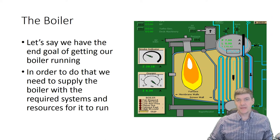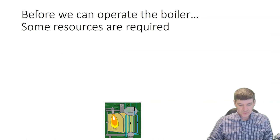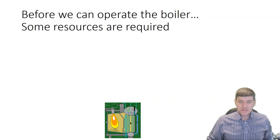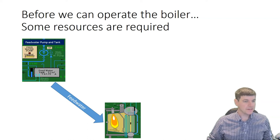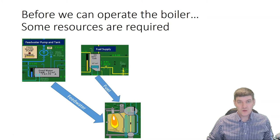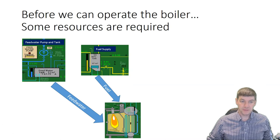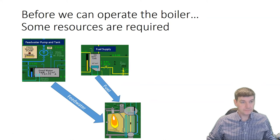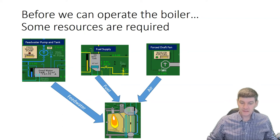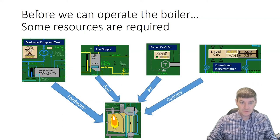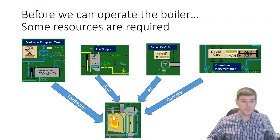If we think about what our boiler might need, we have a few things. It's going to need some water, and we have our feed water pump and tank to provide that. We need some fuel, and we have a tank with fuel that can supply fuel to the boiler — we may also need a fuel pump. We need some air, so we have a forced draft fan to supply air. And we need to be able to control it, so we have controls and instrumentation to operate this piece of equipment.